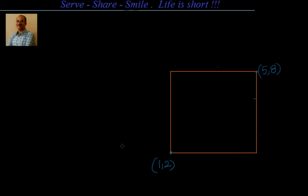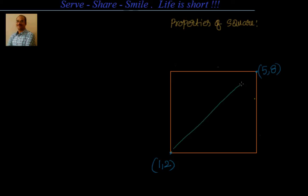Now how to solve this problem — what should be our approach? Let's think for a minute. We certainly need to leverage the properties of a square, so let's write down the properties of the square. First, let's find out what the diagonal looks like. If we just join the two given vertices, that's a diagonal. Now what's the equation of the diagonal?